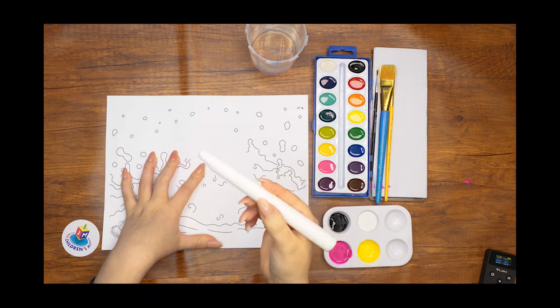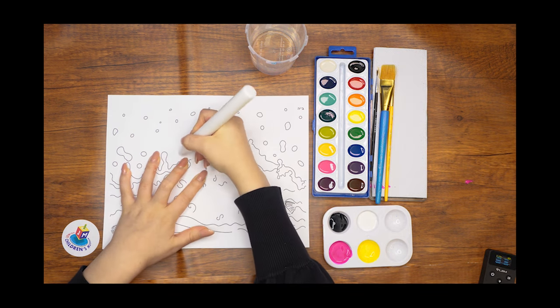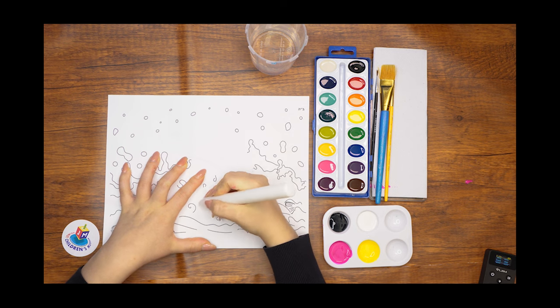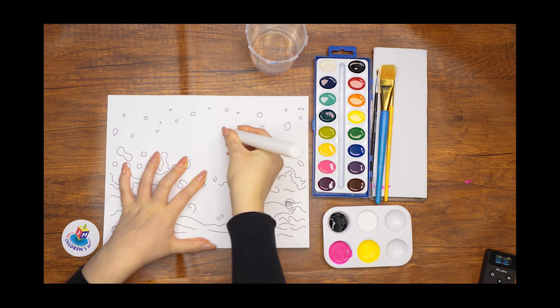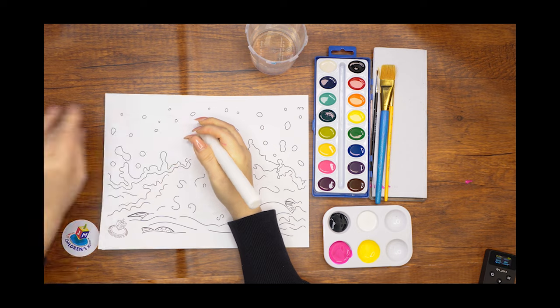Let's begin. Place the picture of the fish under the picture of the water. Trace the outline of the fish with the white candle or crayon. The fish should be visible enough for you to draw its outline.